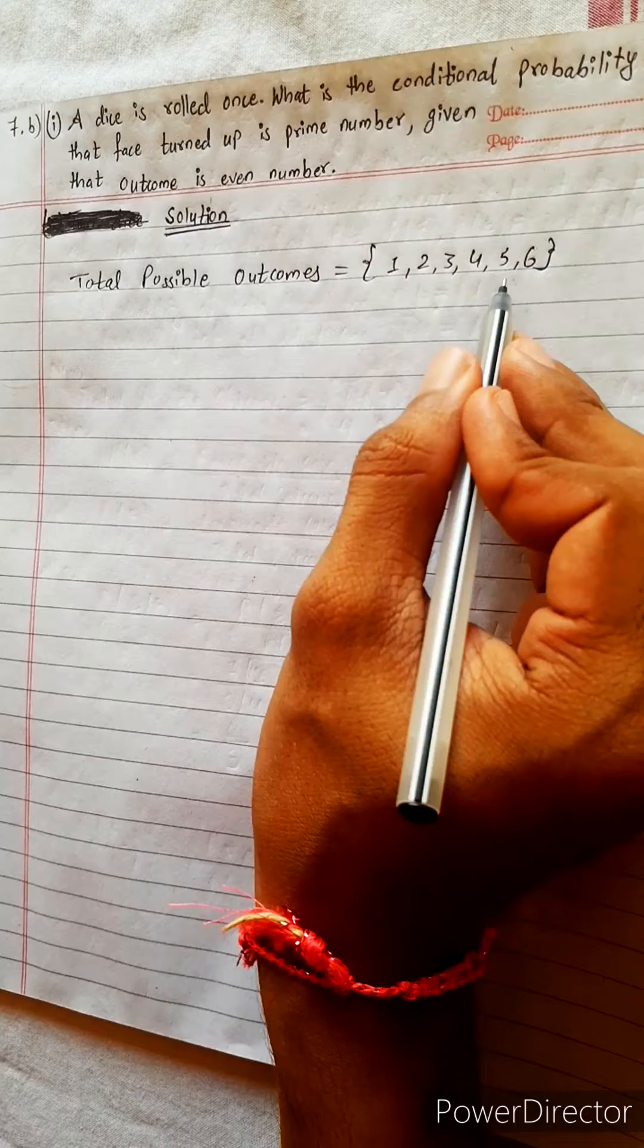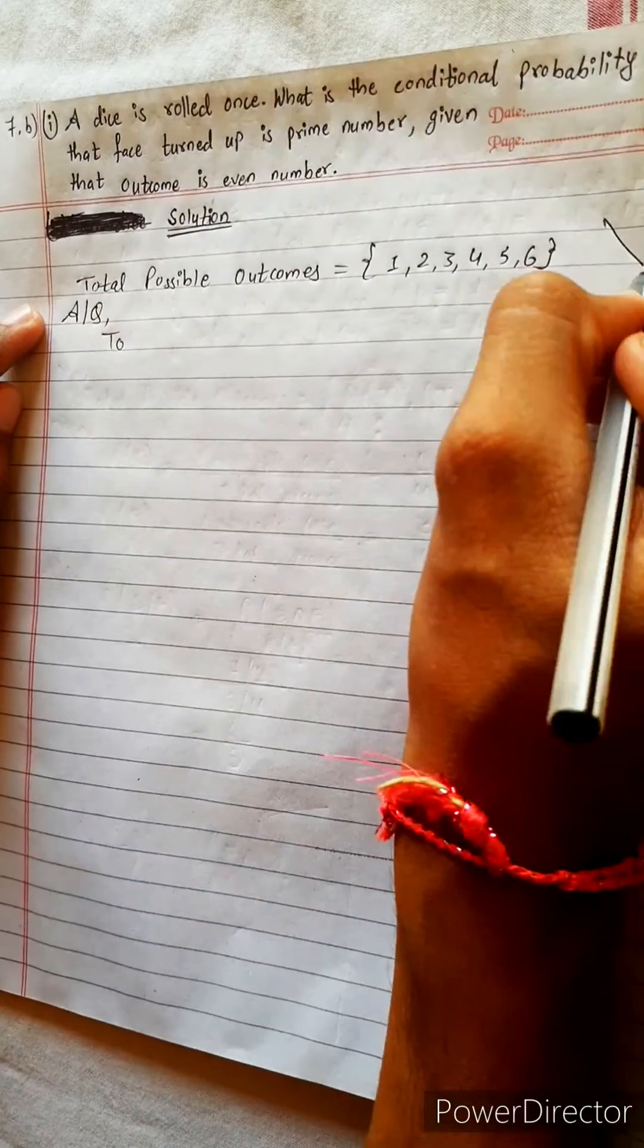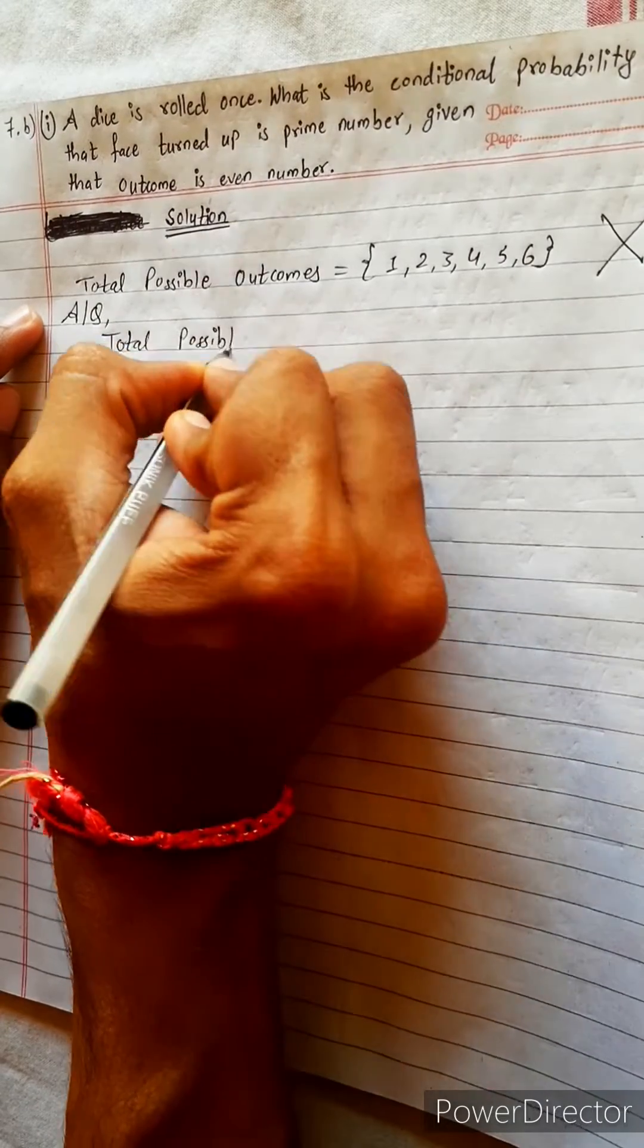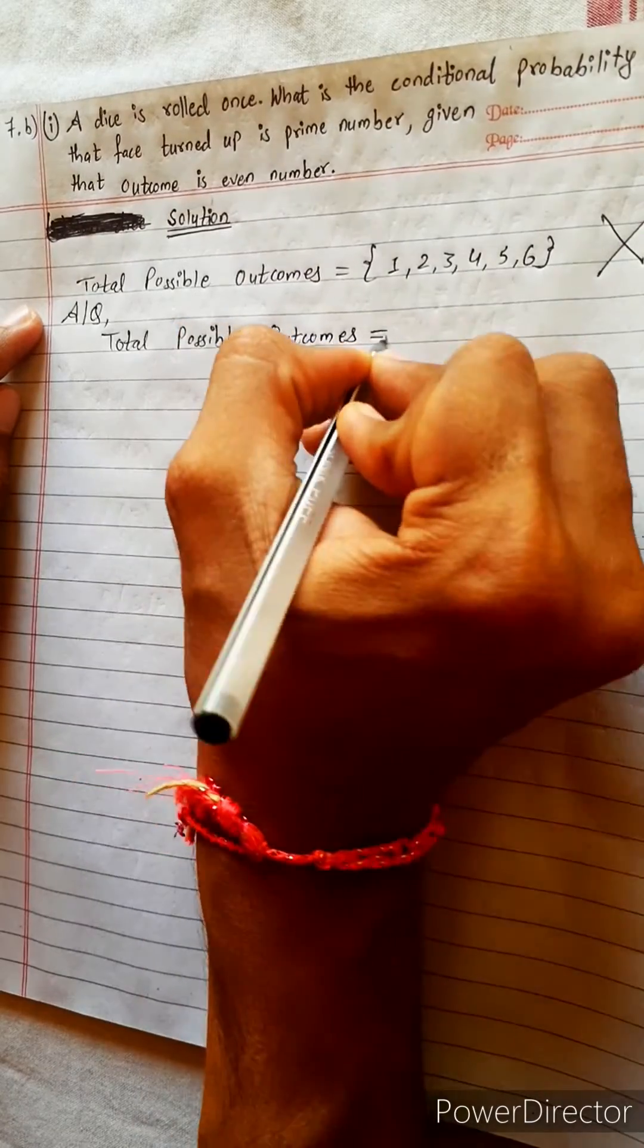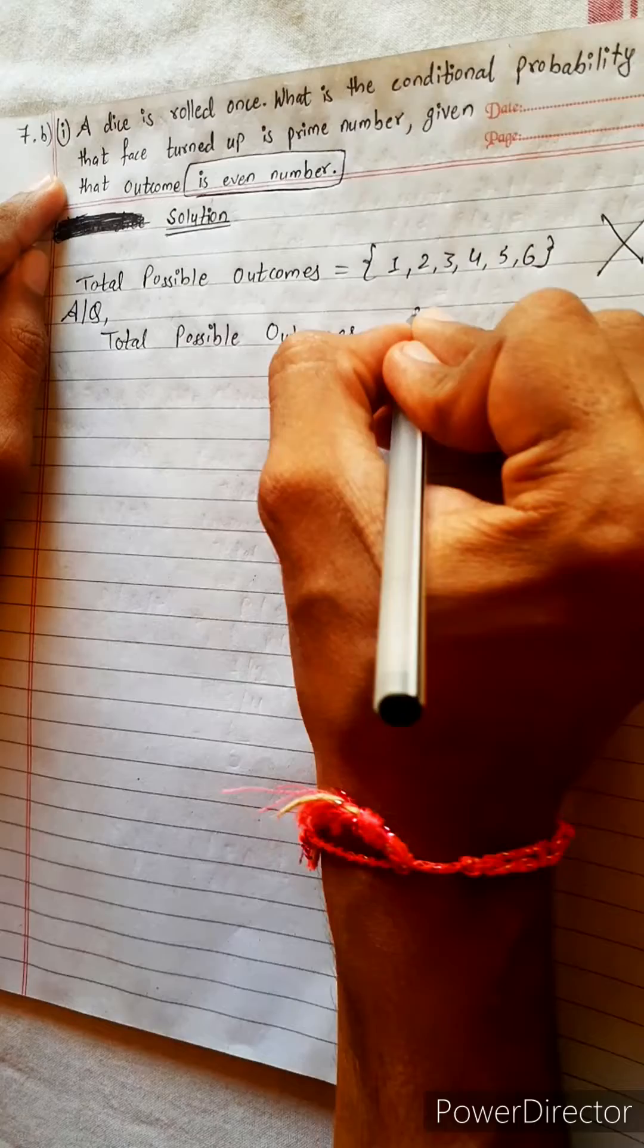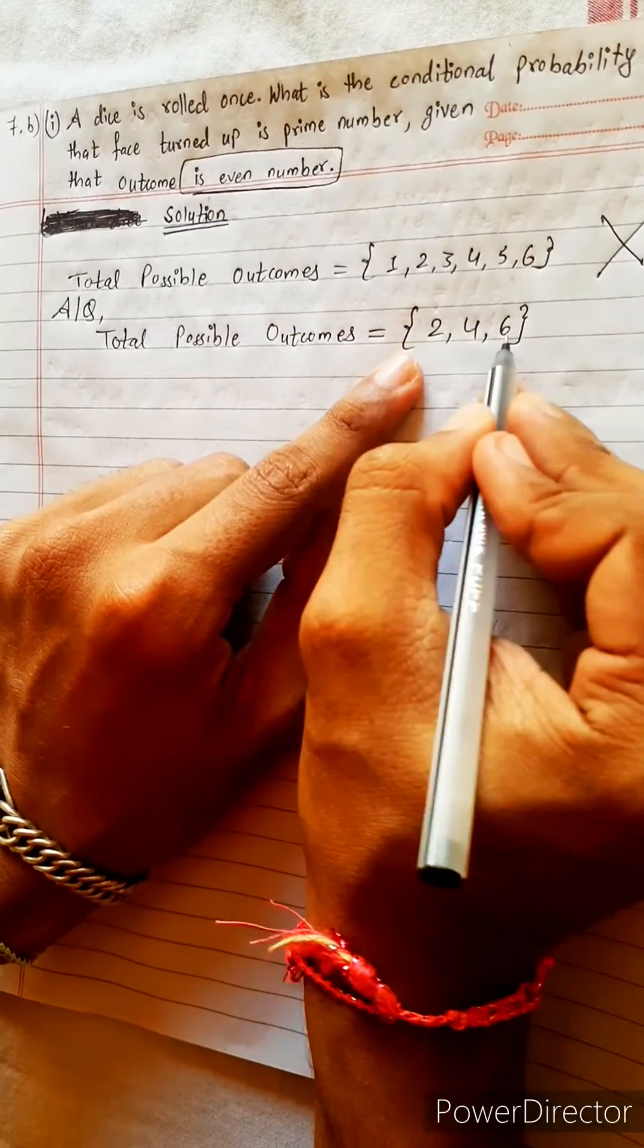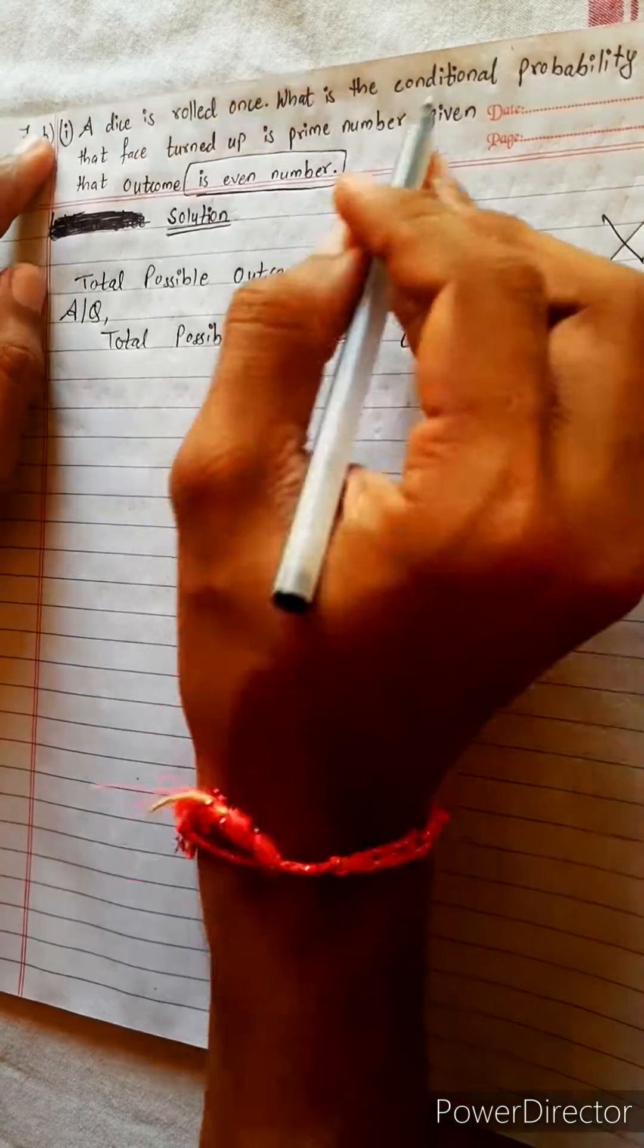Total possible outcomes equals to even numbers. 2, 4, 6. Only even numbers, only even numbers.